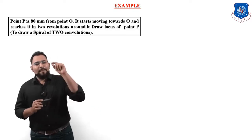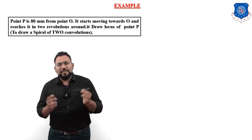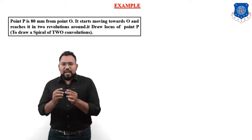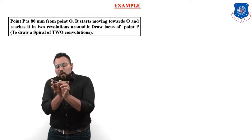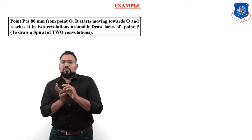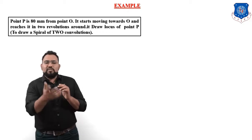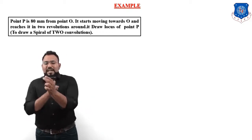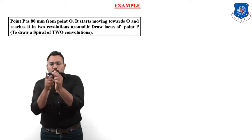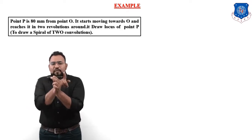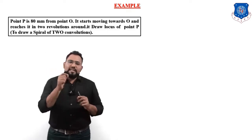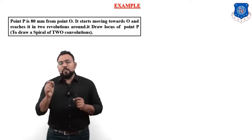The first sentence says point P is 80 mm from point O. In an Archimedean spiral we revolve one straight line, which we name OP. We need the dimension of this line OP. The first statement tells us that point P is 80 mm away from point O, meaning the distance OP is equal to 80 mm.